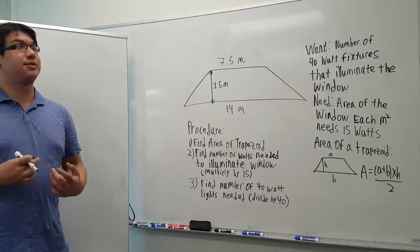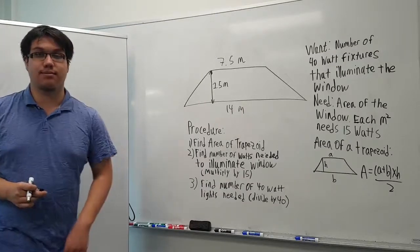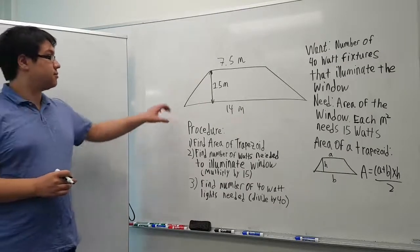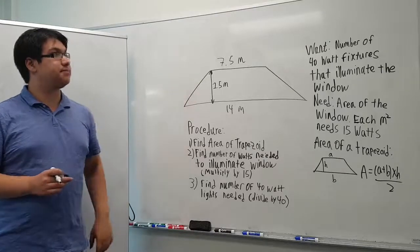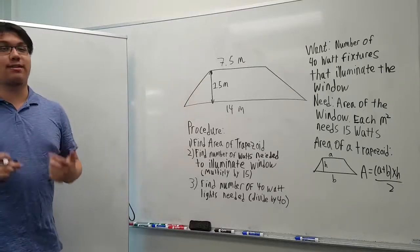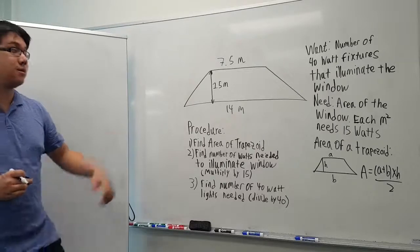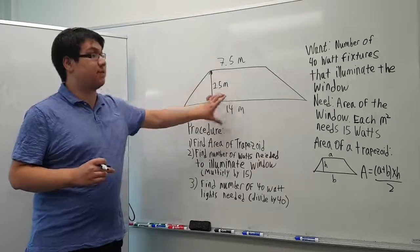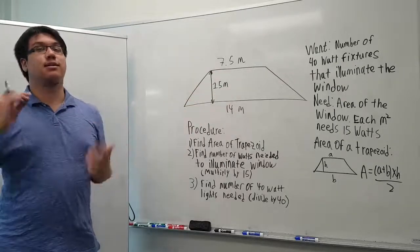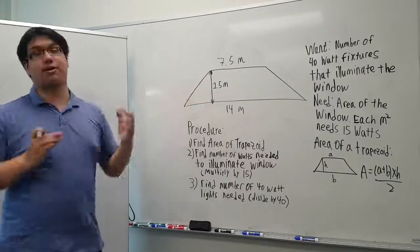Remember that the area of the trapezoid is the small base plus the big base, all in brackets, times the height, and all of that divided by two.